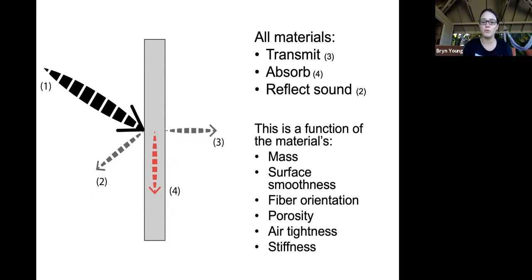If it is a super smooth surface, a lot of that sound is just going to bounce right back into the room rather than absorb or transmit into the other space. If it's really porous, then the sound can go into it a little bit more and either be absorbed or transmit.